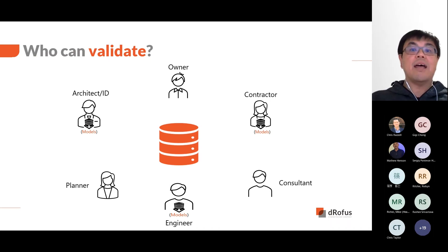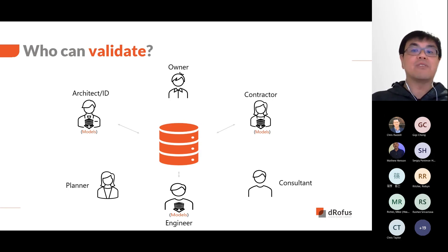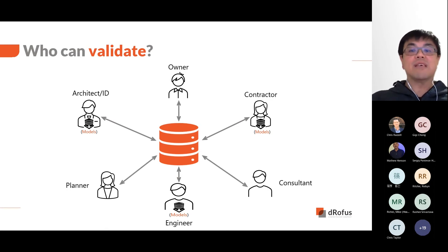On any project there are many stakeholders creating and developing information. Validation takes place within the database or with a geometric model. Stakeholders that work in both database and geometric models can validate between the two systems to ensure the design meets the brief requirements. Stakeholders who do not work with 3D models can also view the information and perform validation within the database.